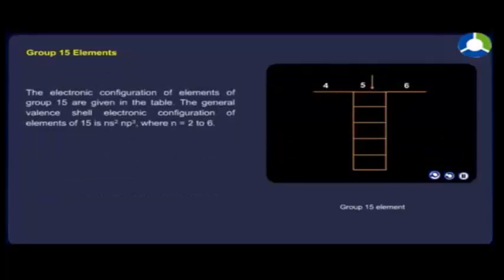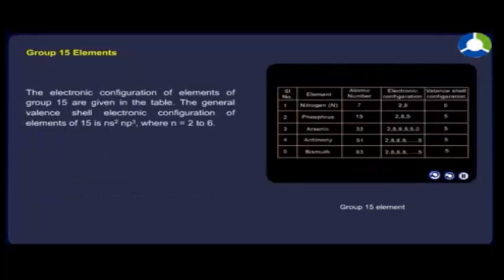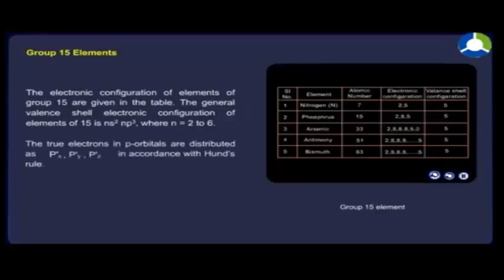The electronic configuration of elements of group 15 are given in the table. The general valence shell electronic configuration of elements of group 15 is ns² np³ where n equals 2 to 6. The three electrons in p orbitals are distributed as px¹, py¹, pz¹ in accordance with Hund's rule.